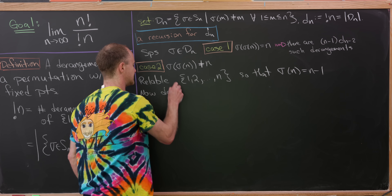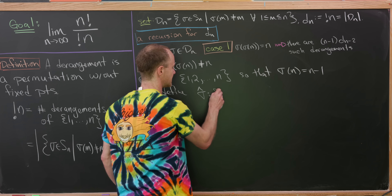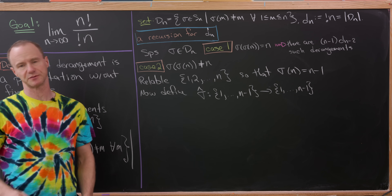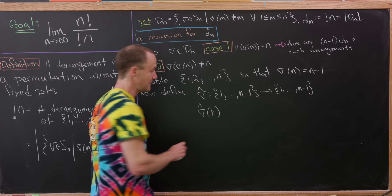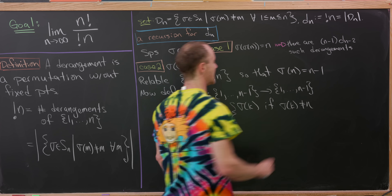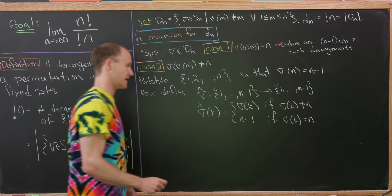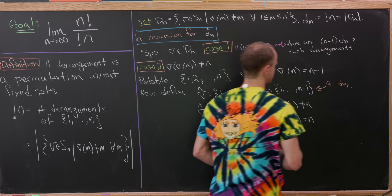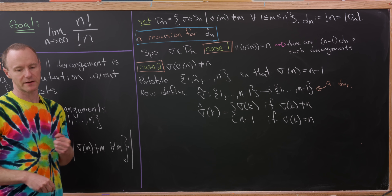Now let's define a companion map σ̂ built out of σ, going from {1, …, n−1} to itself. Hopefully it's a derangement, because that will allow us to do some counting. It's defined as: σ̂(k) = σ(k) if σ(k) ≠ n, and σ̂(k) = n−1 if σ(k) = n. This definitely makes a derangement of that set.